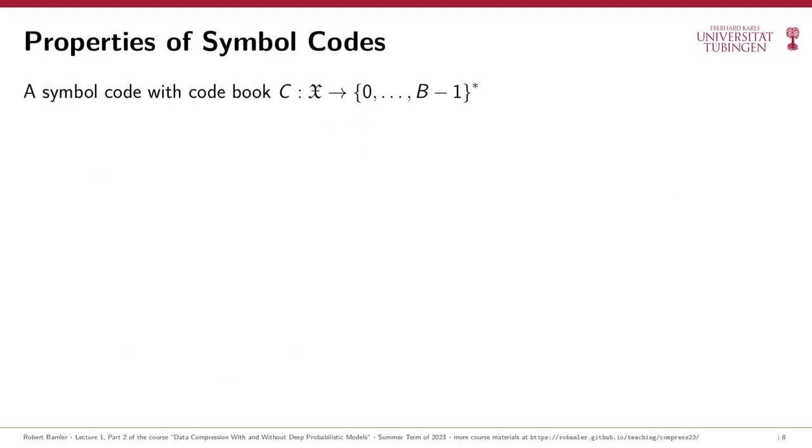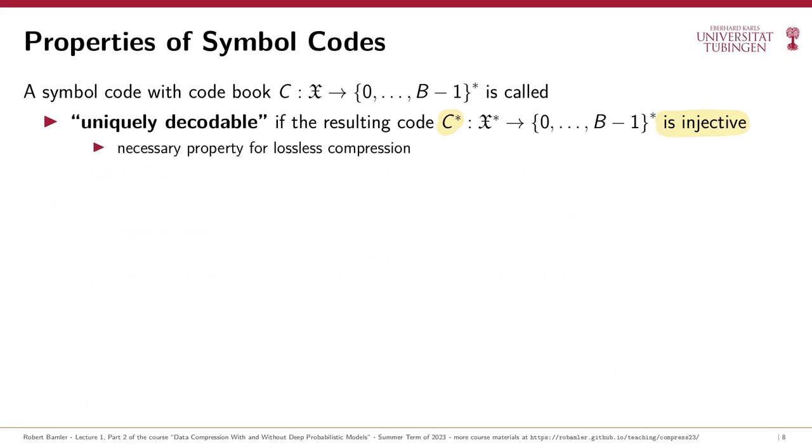So let's formalize what we've just seen. We say that a symbol code c is called uniquely decodable if encoding sequences of symbols cannot lead to ambiguities. Mathematically, this means that the corresponding code c star is injective, i.e. invertible. We'll indeed focus on uniquely decodable symbol codes in the following, because only they are useful for lossless compression. Unfortunately, however, it can be quite difficult in general to analyze whether a given code is uniquely decodable, and you'll see this already on the problem set. This is because unique decodability is really a property of c star, so you have to prove that among all the infinitely many arbitrary length messages, there are no two messages that c star maps to the same bit string.